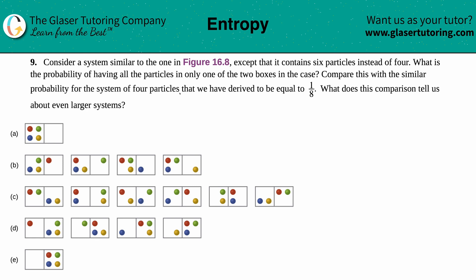Number nine: Consider a system similar to the one in figure 16.8, except that it contains six particles instead of four. What is the probability of having all the particles in only one of the two boxes in the case?